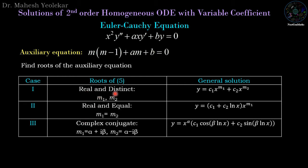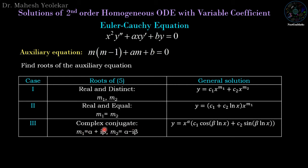If the roots are real and distinct — m1 and m2 — then the general solution is y equal to c1 x power m1 plus c2 x power m2. If the roots are real and equal — m1 equal to m2 — then the solution is y equal to (c1 plus c2 ln x) times x power m1. If the roots are complex conjugates — m1 equal to alpha plus i beta and m2 equal to alpha minus i beta — then the solution is y equal to x power alpha times (c1 cos(beta ln x) plus c2 sin(beta ln x)), where alpha and beta are the real and imaginary parts of the complex number.